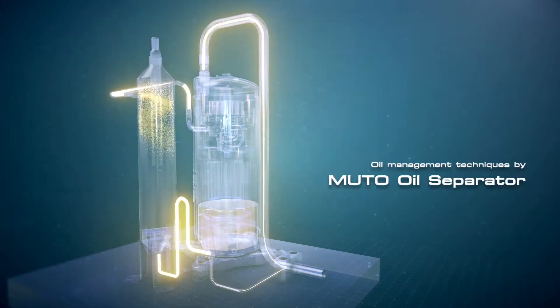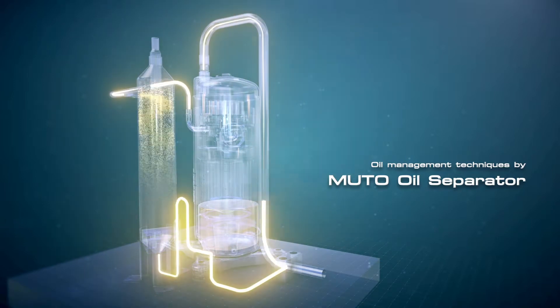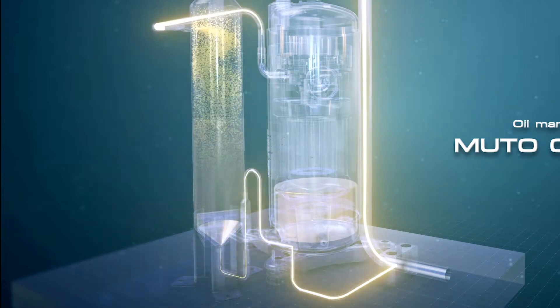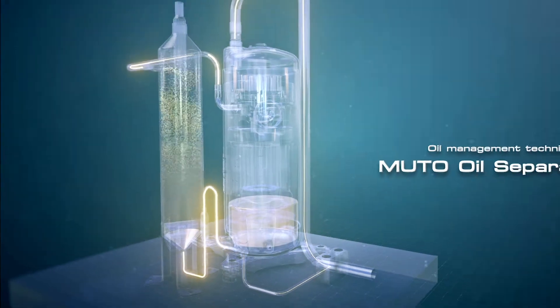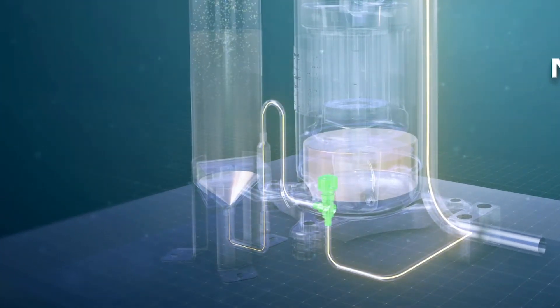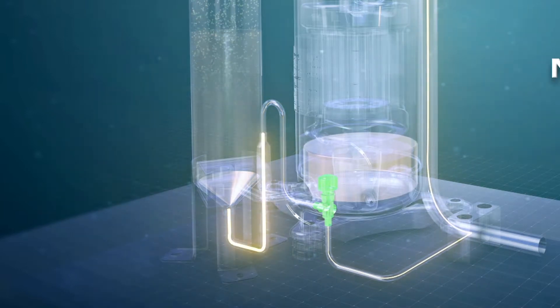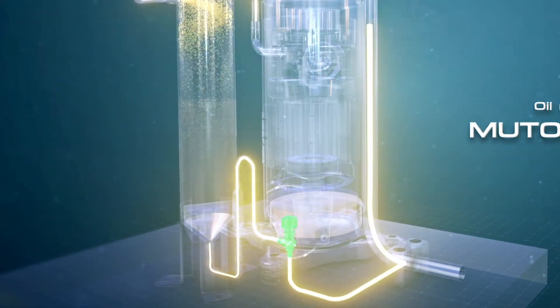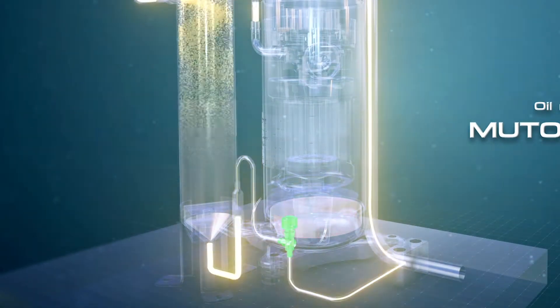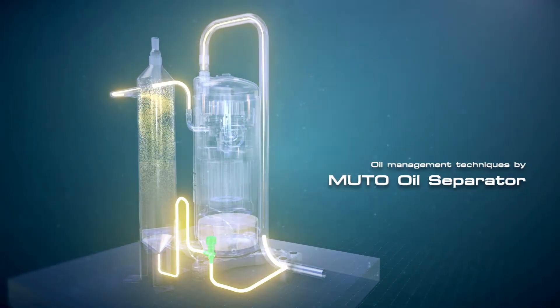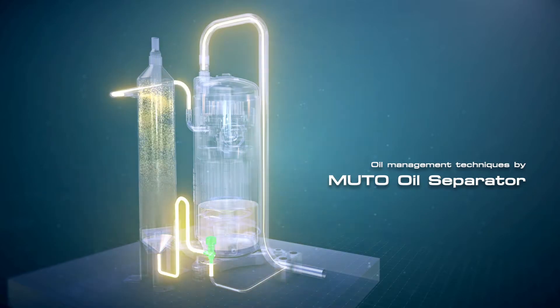Generally, when compressors run at high speed, a large amount of oil is released from the compressors. On the other hand, if compressors run at low speed, a small amount of oil is released. The oil return technique by MUTO oil separator keeps the oil level in compressors at a certain level by regulating the valve openings to match with compressor speed. In case of oil level decline to reach threshold level, the oil separator will promptly release oil into the compressor.